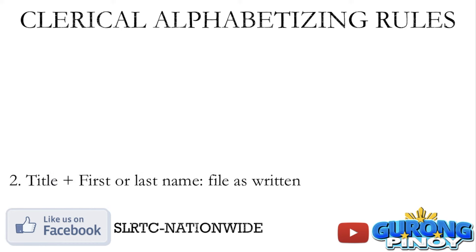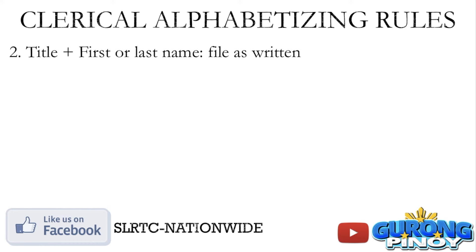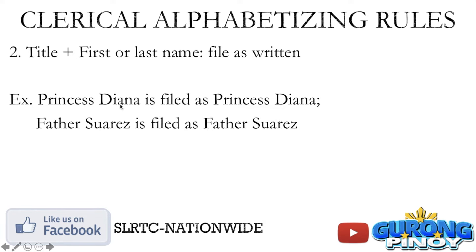The second rule: if you are given the title plus the first or just the last name — hindi full name — then you file it as written, as is. For example, if you have Princess Diana — that's just a title and the first name — you file it as Princess Diana. If you are given Father, which is the title, and the last name Suarez, then you file it as Father Suarez.